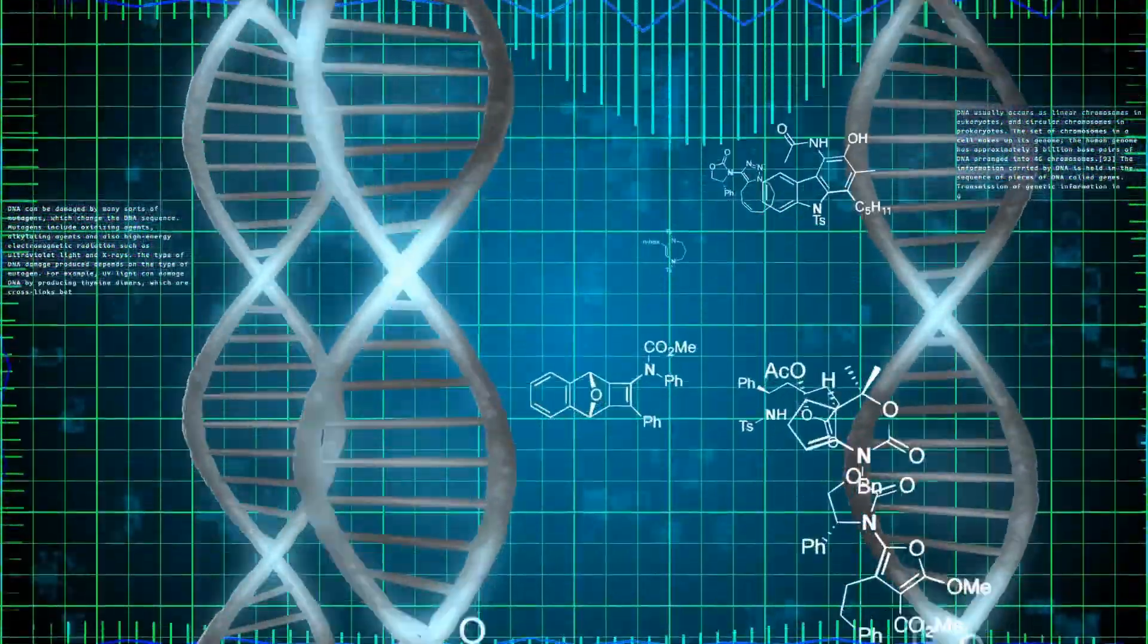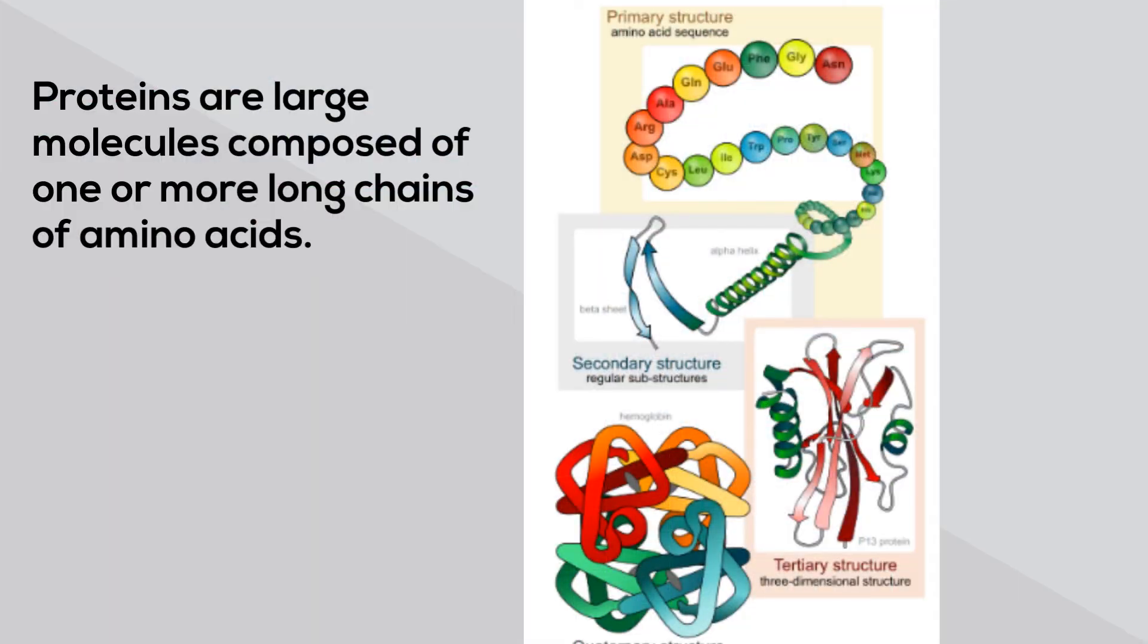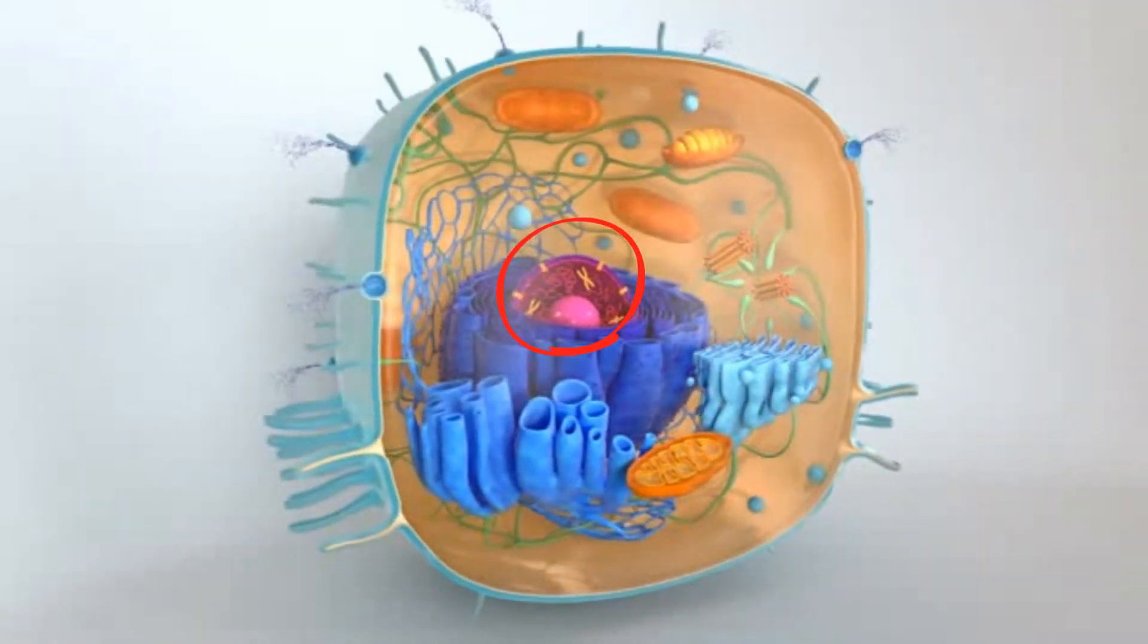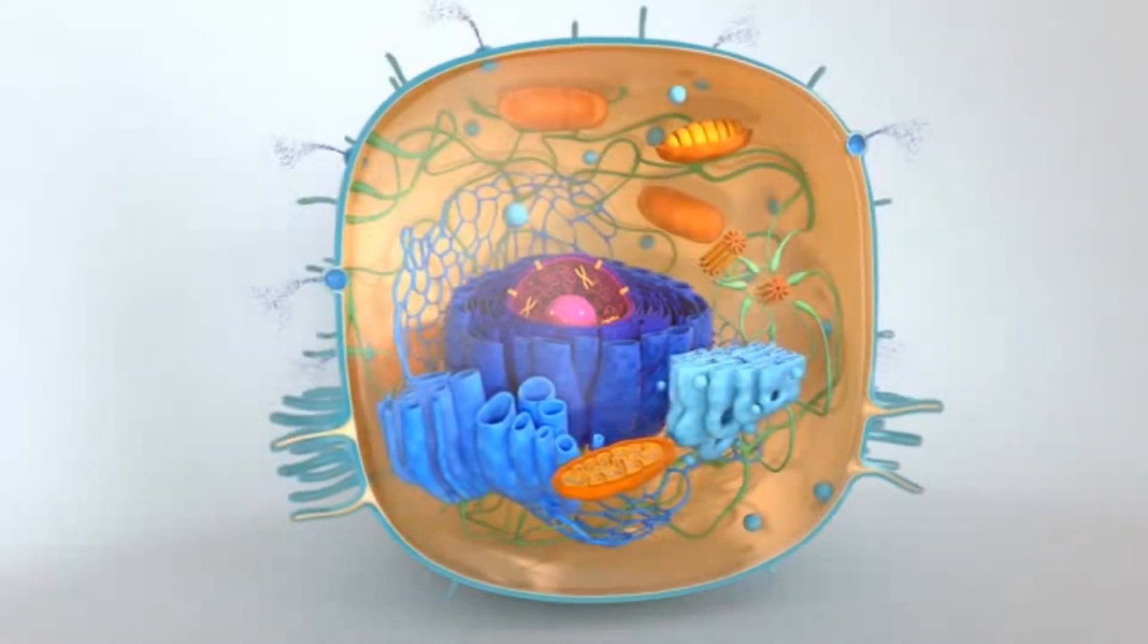Protein synthesis is the creation of proteins, which are large molecules composed of one or more long chains of amino acids. Protein synthesis begins in the nucleus. DNA is found in the nucleus and in humans it is split among 23 chromosomes.